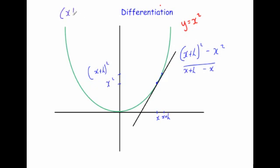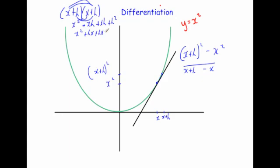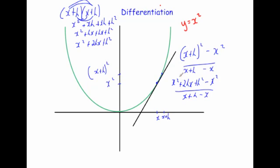Expanding the bracket: x plus h times x plus h gives x squared plus hx plus hx plus h squared, which simplifies to x squared plus 2hx plus h squared. So the top line becomes x squared plus 2hx plus h squared, subtract x squared. The x squared terms cancel, and the bottom x terms cancel, leaving 2hx plus h squared all over h. Dividing through by h, the h's cancel, leaving 2x plus h.